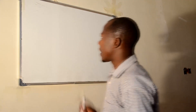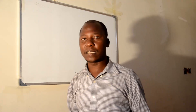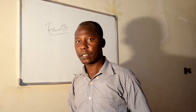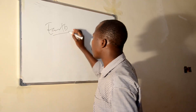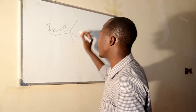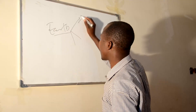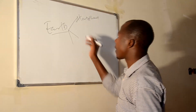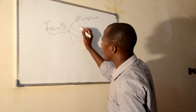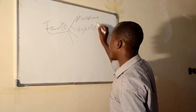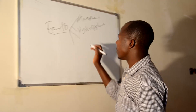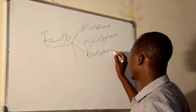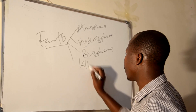Dear students, our planet is called Earth. Earth is the third planet whereby living things can be found. This Earth consists of four things: atmosphere, hydrosphere, biosphere, and lithosphere.